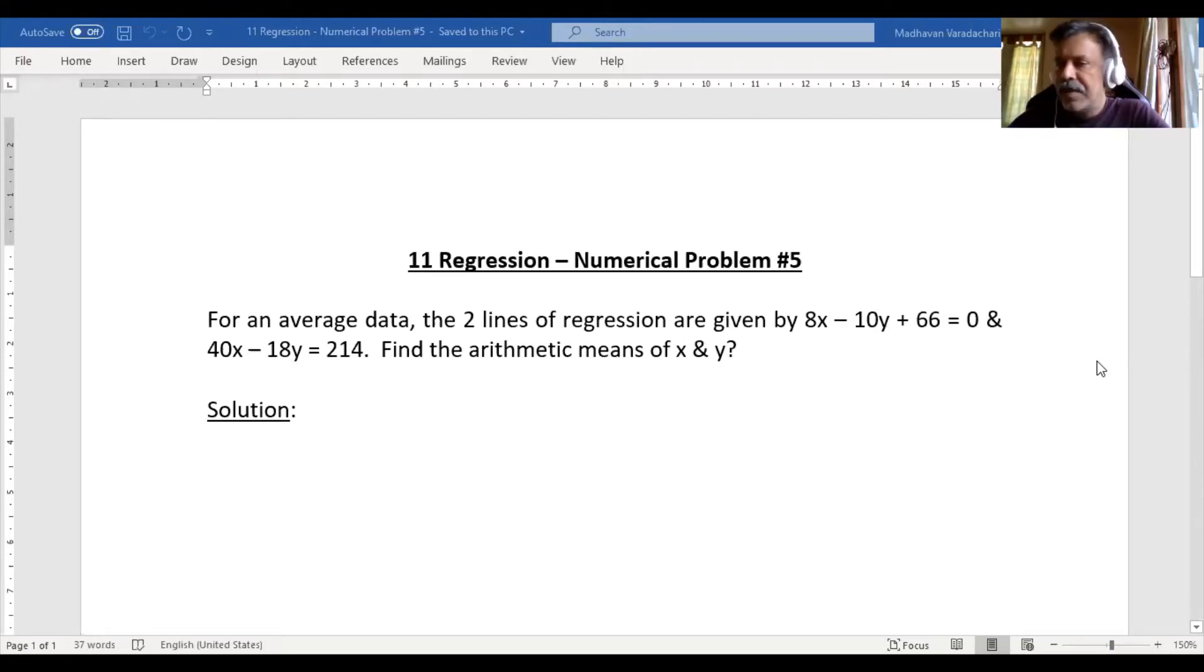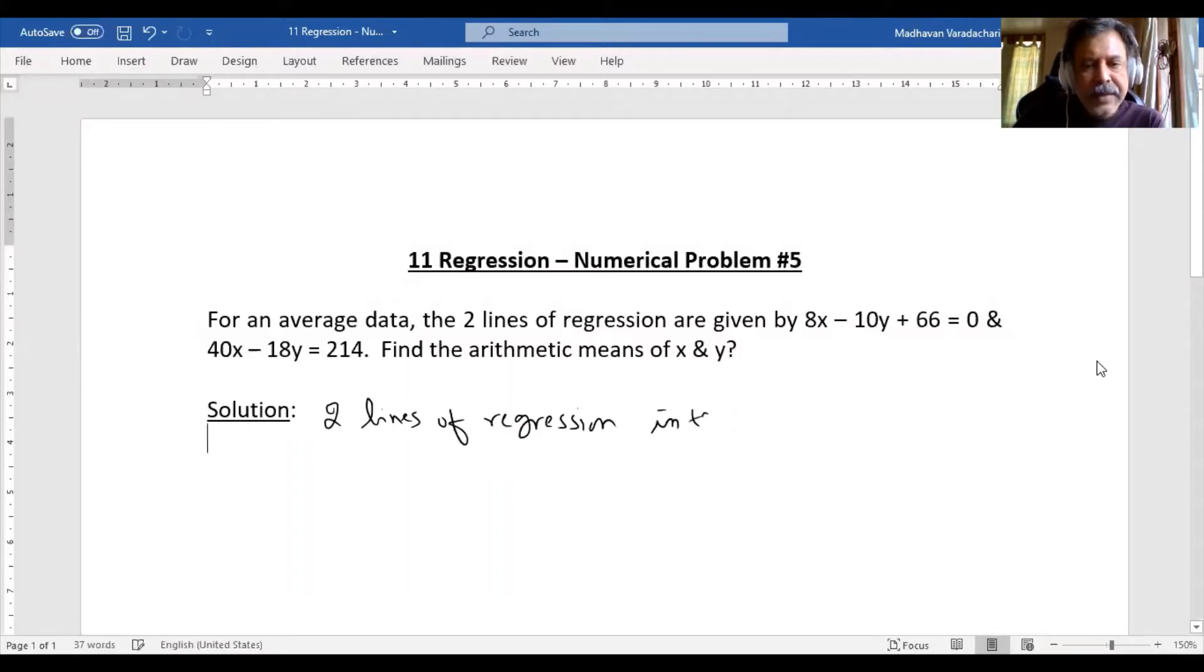As per the properties of regression lines, two lines of regression intersect at the point (X̄, Ȳ), which represents the arithmetic mean of X and the arithmetic mean of Y.